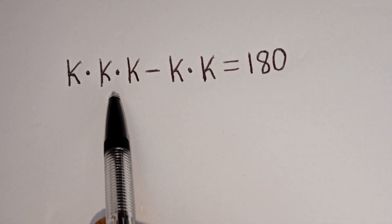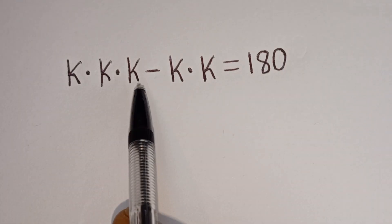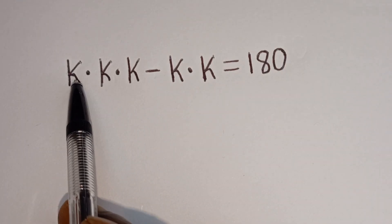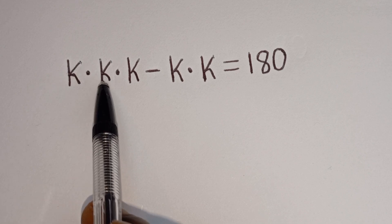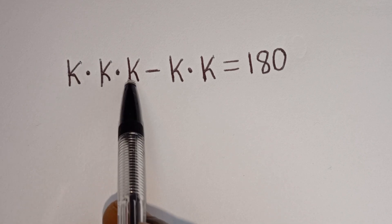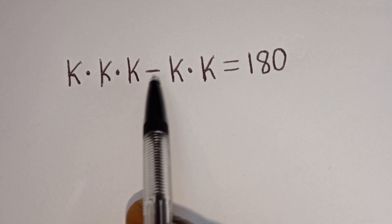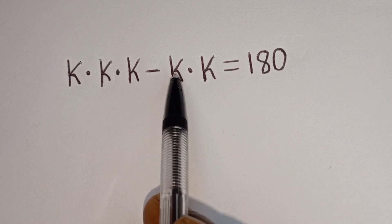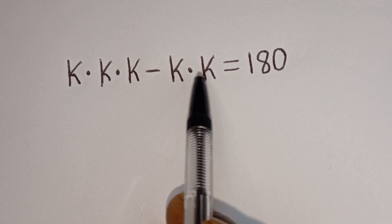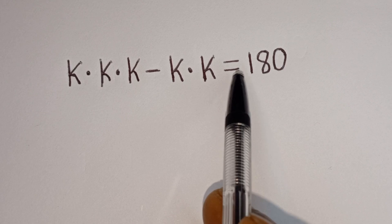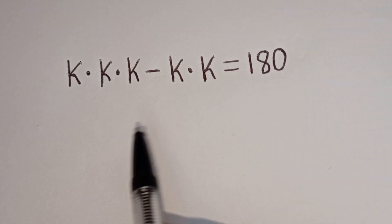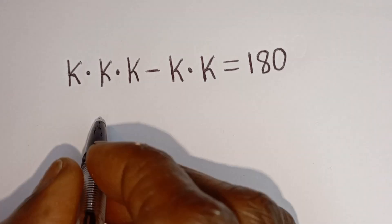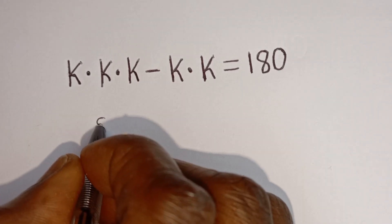Hello, how to solve for K in this equation? K multiplied by K multiplied by K minus K multiplied by K is equal to 180. Solution.